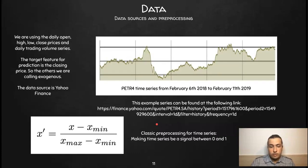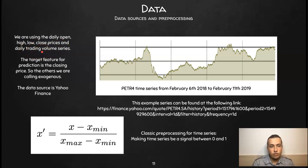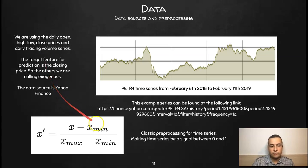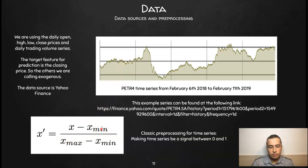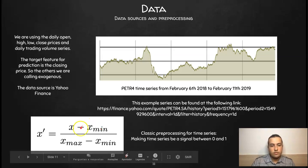What are the exogenous features we're taking into consideration? The daily open, high, low, and close prices and the trading volume are considered. The target feature is still the closing price, and we call the others exogenous. The data source we use is Yahoo Finance, and we apply a normalization to the financial signal to bring it between 0 and 1 by subtracting the minimum and dividing by the maximum range.